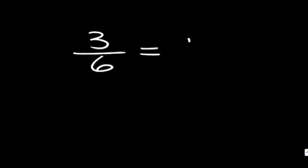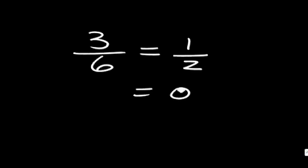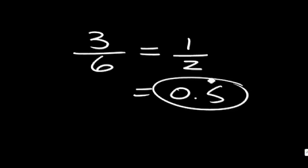There are 3 outcomes out of the 6 possible outcomes that correspond to the event of rolling an odd number. This reduces to 1/2, which is 0.5 numerically.